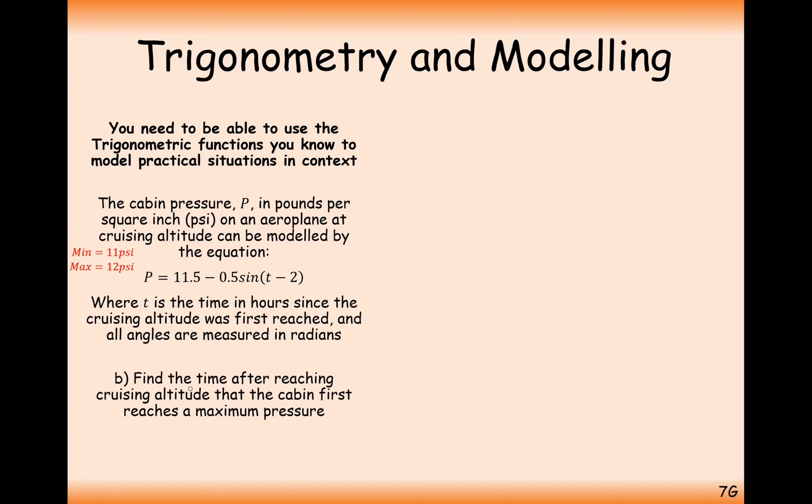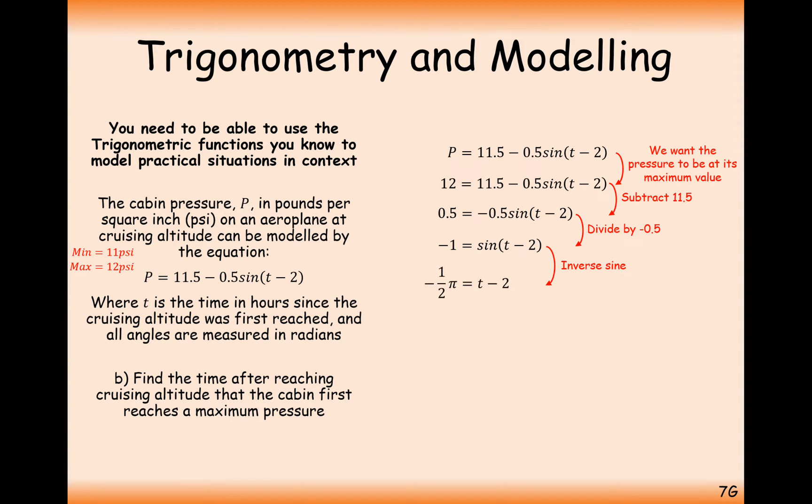Let's get started on the next bit. Find the time after reaching cruising altitude that the cabin first reaches maximum pressure. We've already worked that out as 12, so replace P with 12 and do a bit of rearranging. We want the sine curve to equal minus 1. Do inverse sine and we get T minus 2 equals minus half pi. Add 2 to both sides, and T equals 0.43, which converts to 26 minutes.